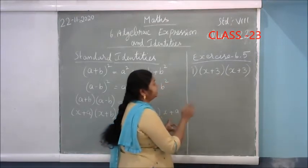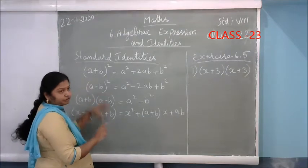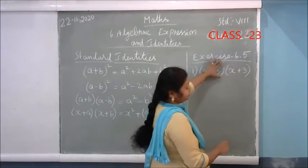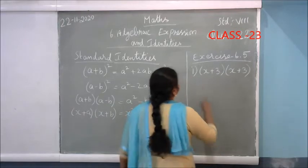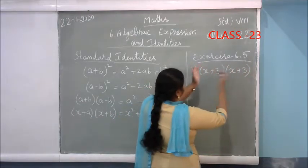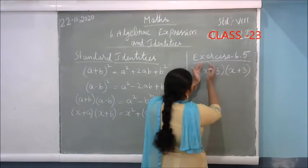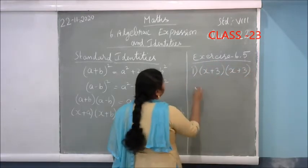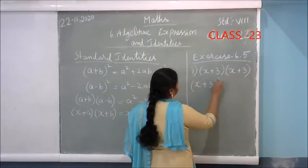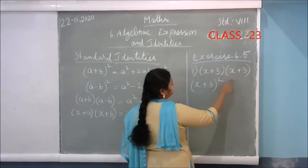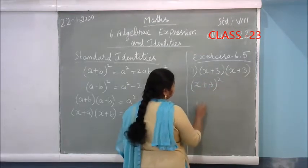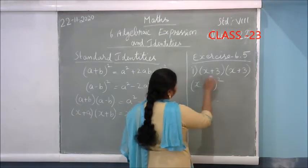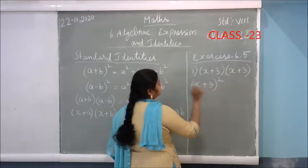First you should identify the identity. Identify which of the 4 formulas applies to this sum. See the 2 expressions — the 1st term is X and the 2nd term is 3 in both expressions. So you can write (X+3)(X+3) as (X+3)². X into X gives X². So (X+3)(X+3) = (X+3)², which is in the form of the 1st identity — (A+B)². Here, instead of A we have X, and instead of B we have 3.